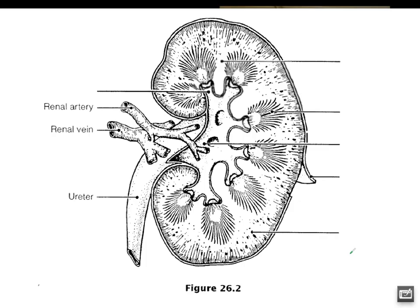The next diagram is a longitudinal cut of the kidney. When you actually dissect the kidney in class, you will see that this does look very much like what the kidney looks like. The blood comes in through the renal artery, and the clean blood comes out through the renal vein. Working from the outside in, we start with this outer line — kind of like the rind or peel of the kidney — which is called the renal capsule. It helps keep all of the tissue within the kidney contained.